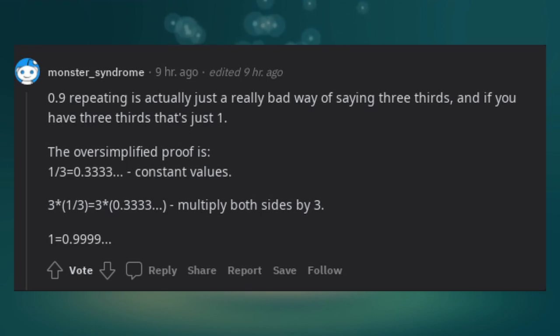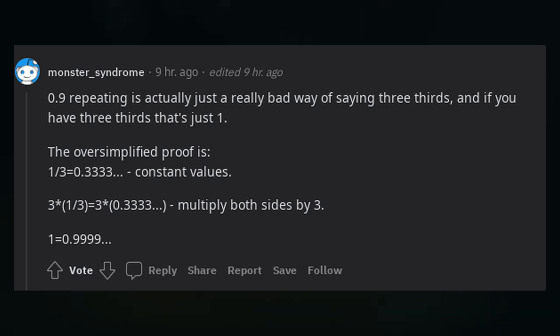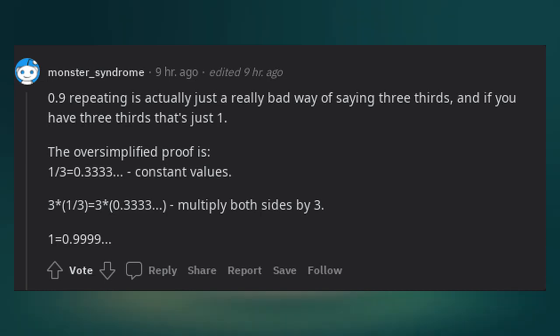The oversimplified proof is: 1/3 equals 0.3333 repeating—constant values. 3 times 1/3 equals 3 times 0.3333 repeating. Multiply both sides by 3. 1 equals 0.9999 repeating.